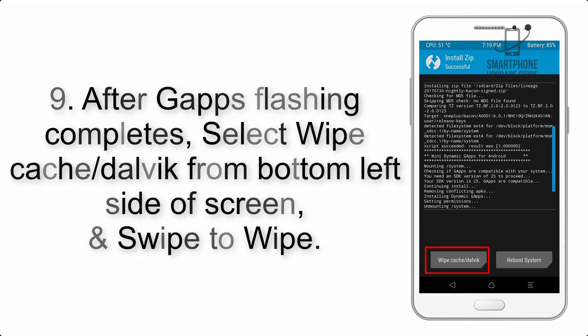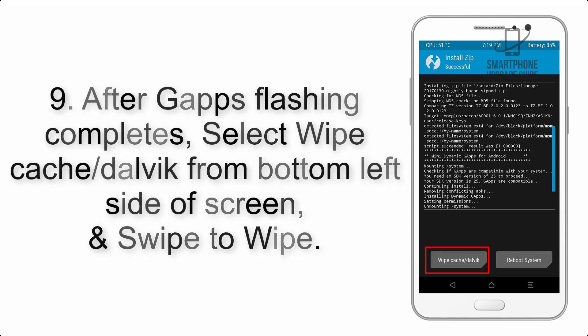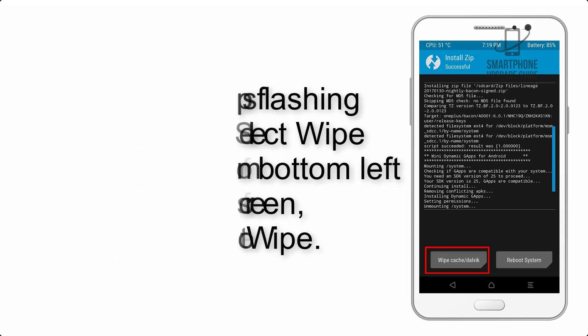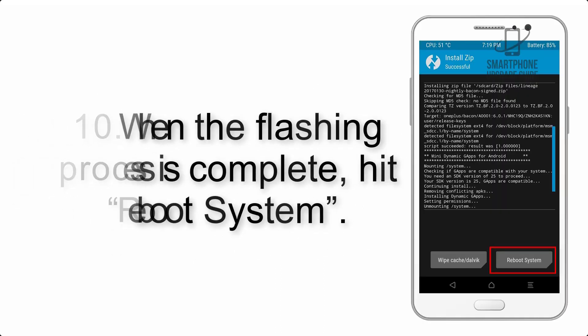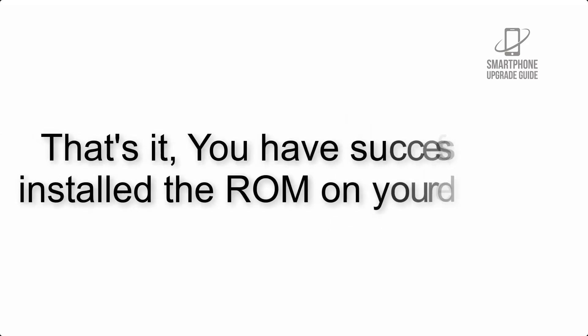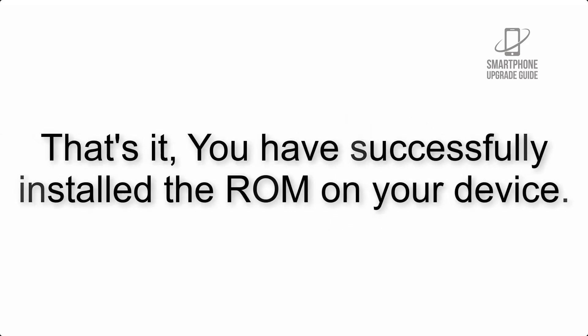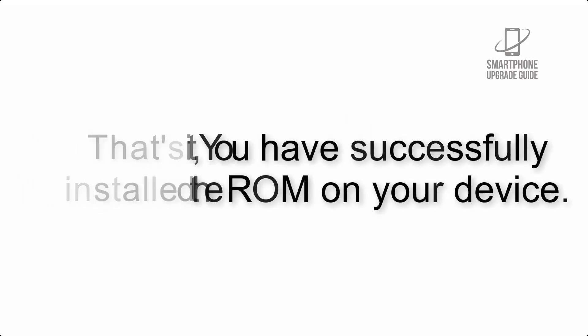Step 9: After GApps flashing completes, select Wipe Cache and Dalvik from the bottom left side of the screen and swipe to wipe. Step 10: When the flashing process is complete, hit Reboot System. That's it — you have successfully installed the ROM on your device.